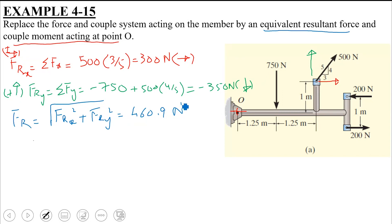What about its angle theta? Can you determine this angle theta? Tan inverse of... So tan inverse 350 over 300. So this comes out to be 49.4.